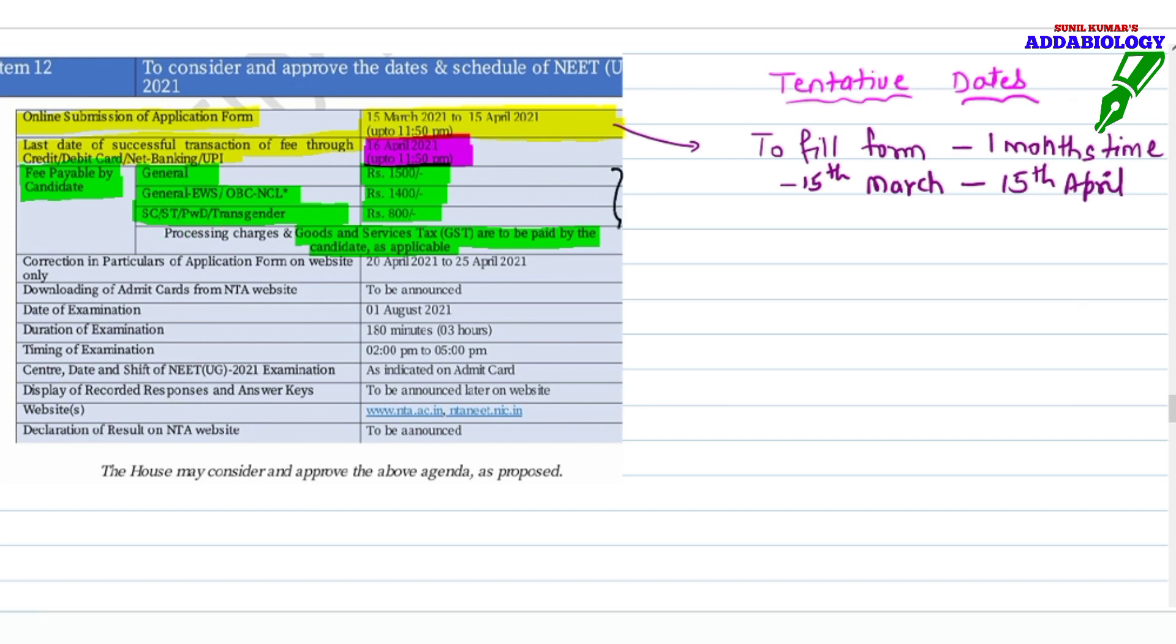If there is any correction that you want to do in your application form, it will be available on the website only. The date will be 20th April 2021 to 25th April 2021. This is tentative date students. You will get an opportunity to do any kind of corrections if you have done any mistake.